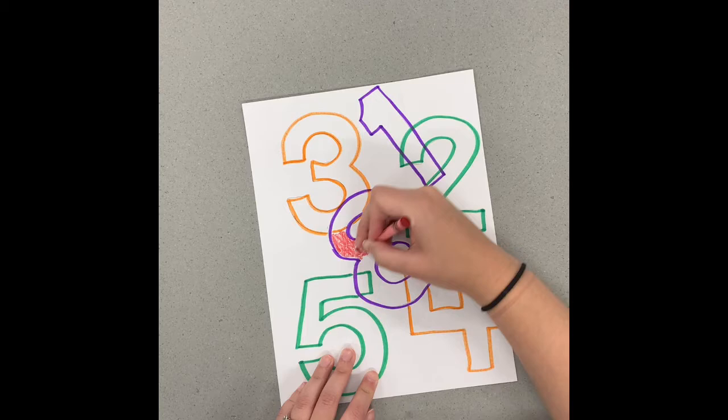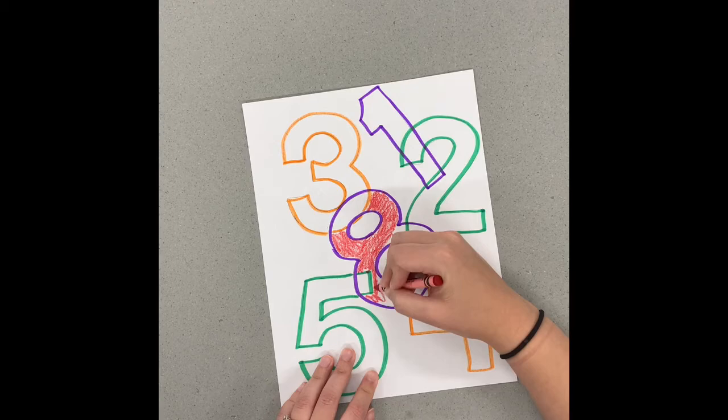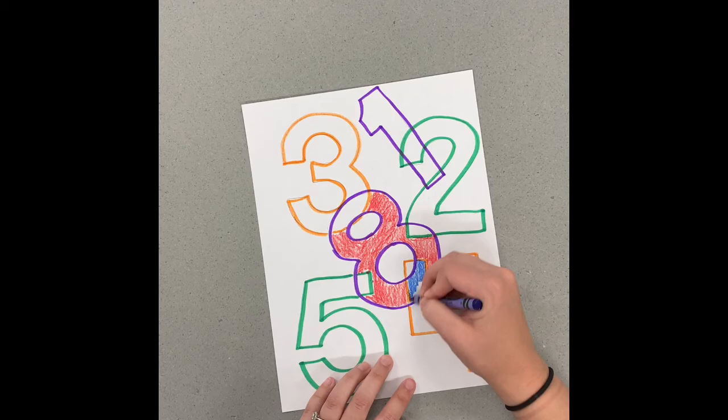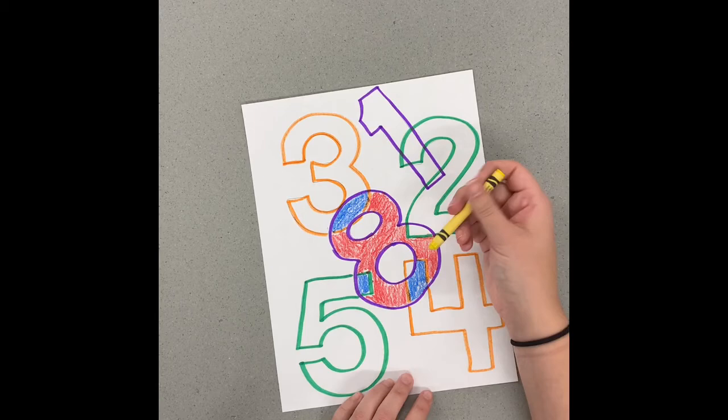Make sure you're coloring in nicely and filling in that whole space. I'm working around all those numbers. Now I'm going to switch to a different color, but I'm going to finish coloring my eight where the numbers overlap, and you can do whatever colors from your color family you want.